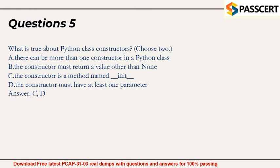Question 5. What is true about Python class constructors? Choose two. A. There can be more than one constructor in a Python class. B. The constructor must return a value other than none. C. The constructor is a method named underscore underscore init underscore underscore. D. The constructor must have at least one parameter. Answer: C, D.